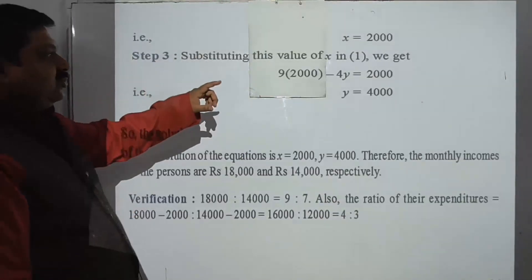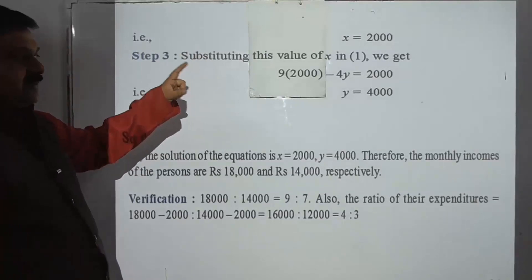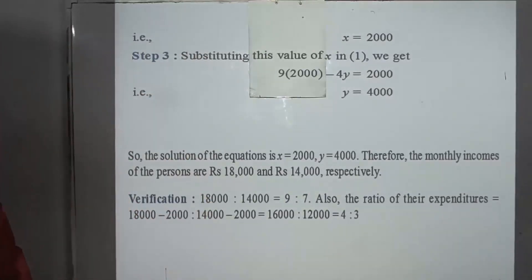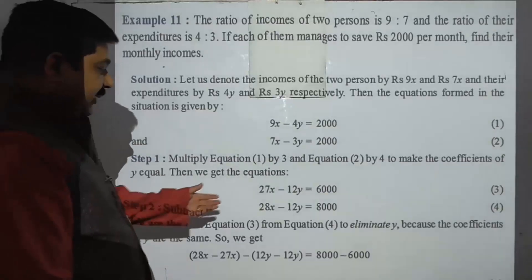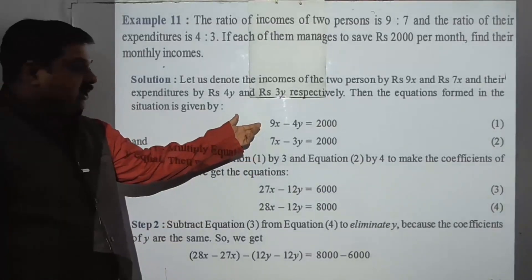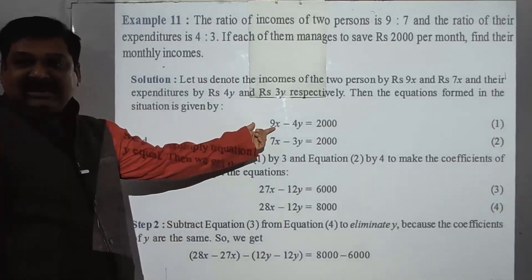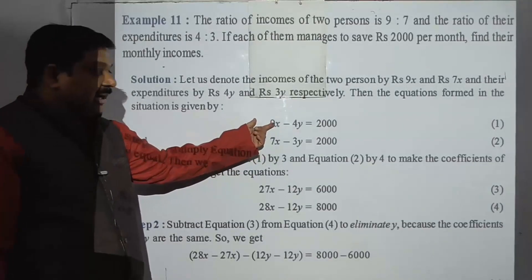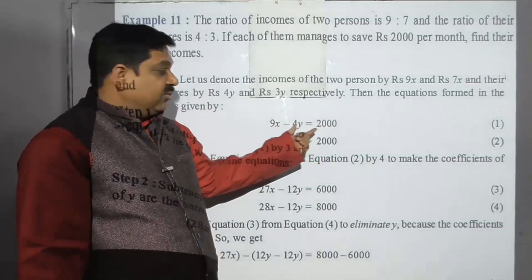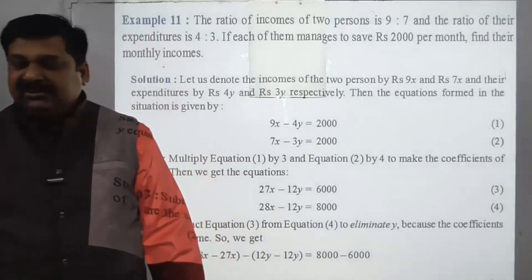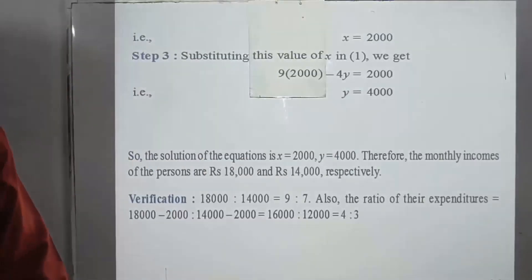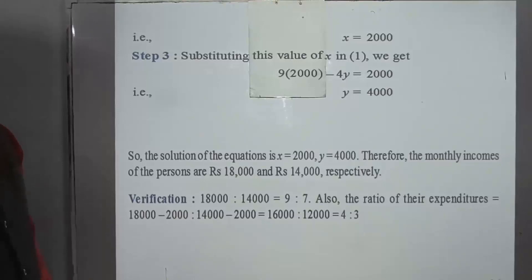So x equals 2000. Now substitute this value of 2000 into any one of the equations. Taking the first equation and substituting x equals 2000, we get 18000 minus 4y equals 2000, which gives us the value of y as 4000.